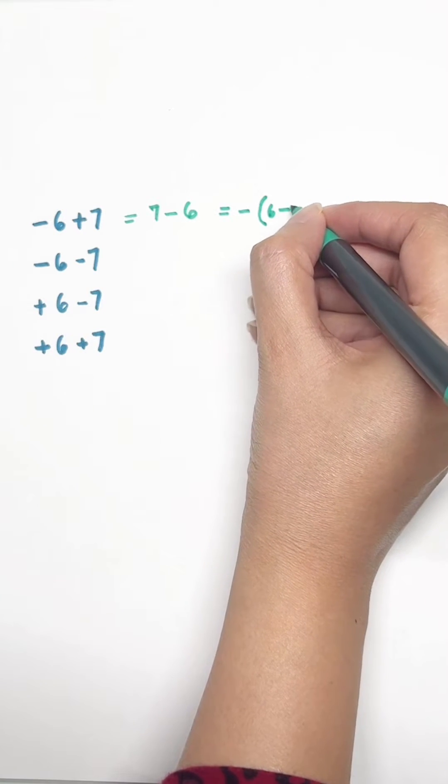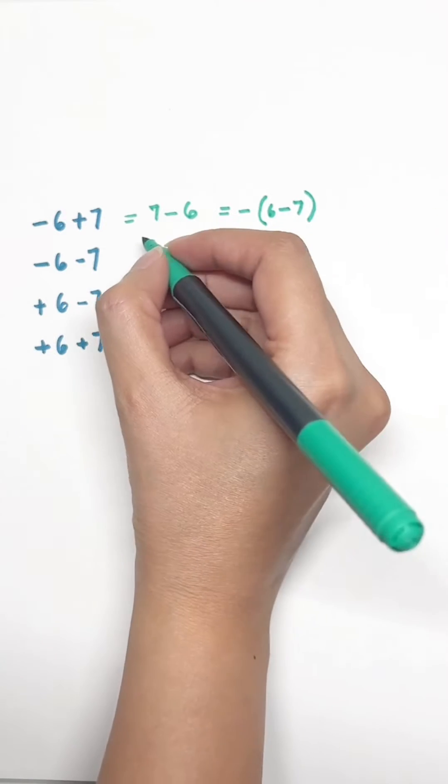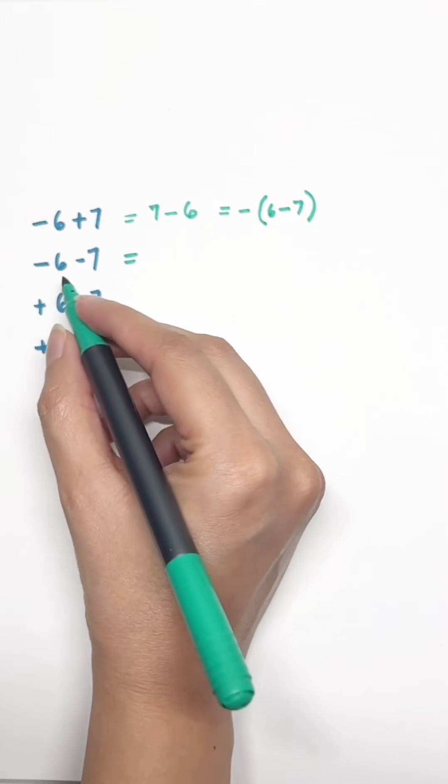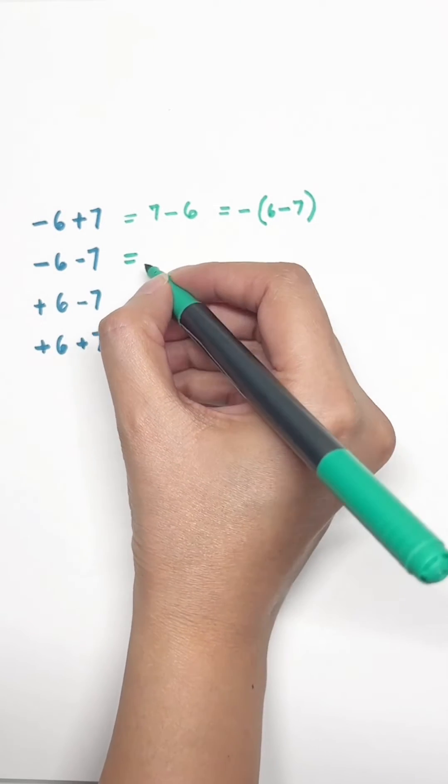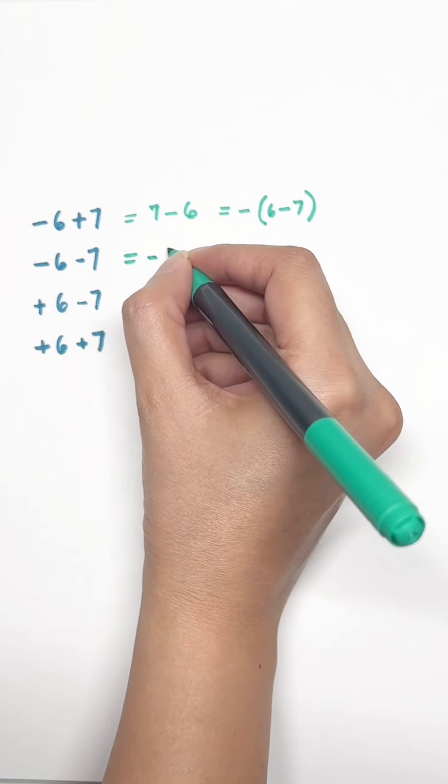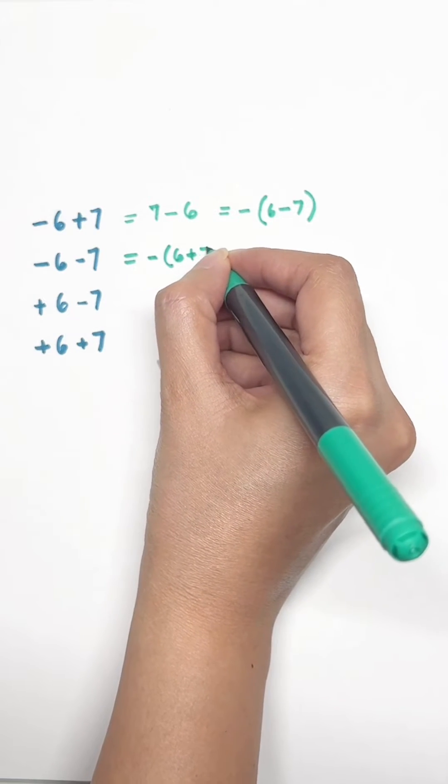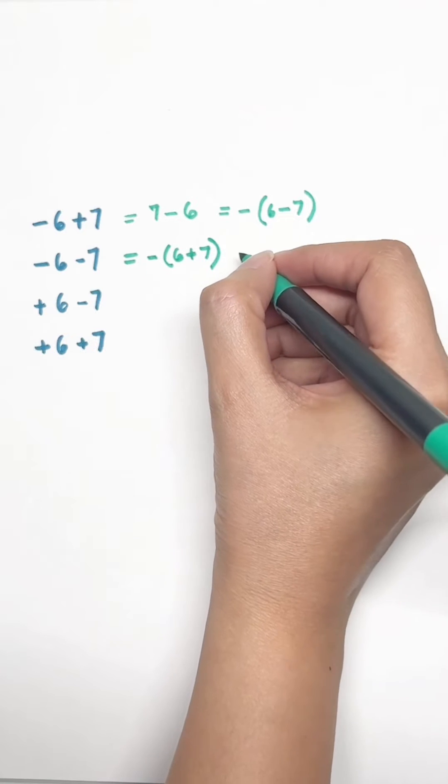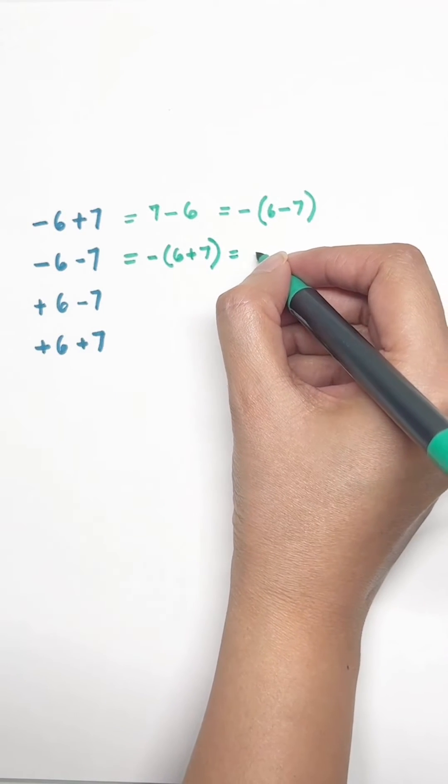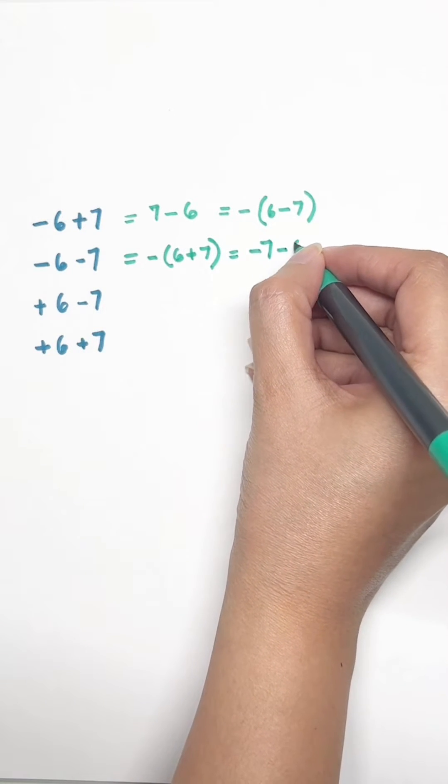Look at the next one: -6 - 7. You can rewrite this as minus outside the brackets and just change the signs inside, or you can write this as -7 - 6. Same thing.